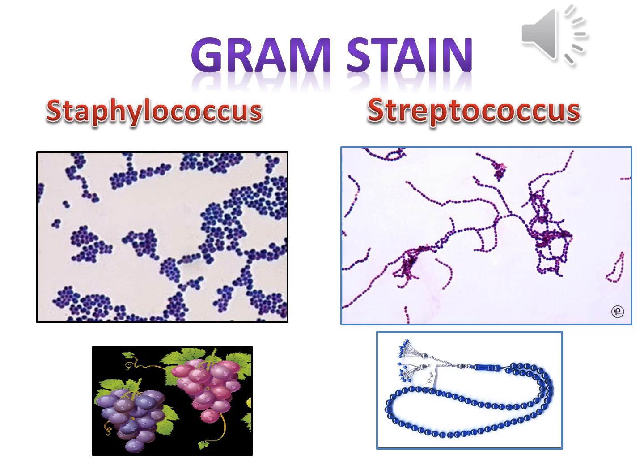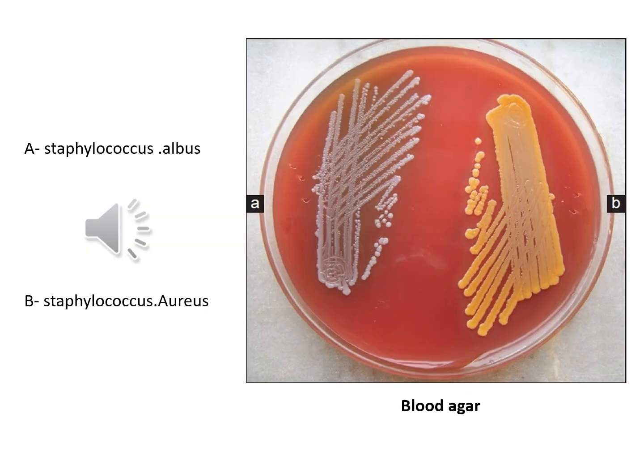Staphylococcus includes at least 40 species. The most common species associated with clinical infection are Staphylococcus aureus, Staph epidermidis, Staph haemolyticus, Staph hominis, and Staphylococcus albus. Staphylococcus aureus appears yellow-golden colonies often with hemolysis when grown on blood agar plates. The golden appearance is the etymological root of the bacterium's name — aureus means golden in Latin — while other Staphylococcus species such as albus or epidermidis appear as white colonies on blood agar.